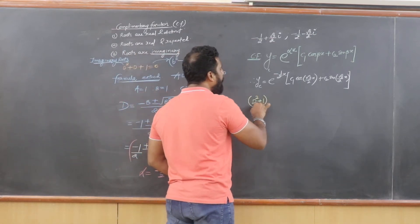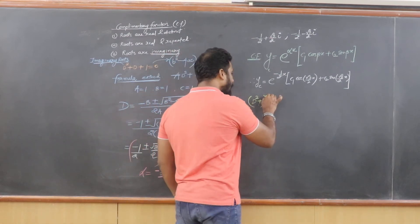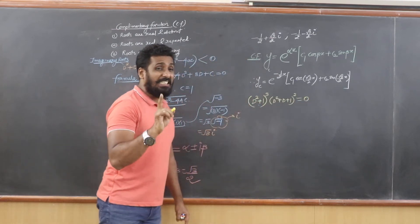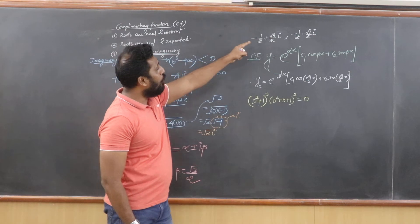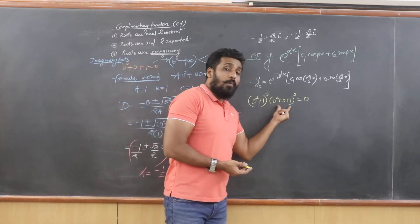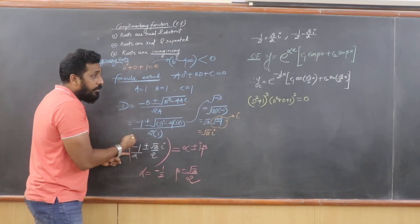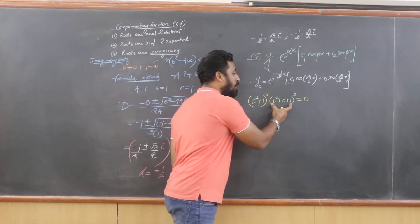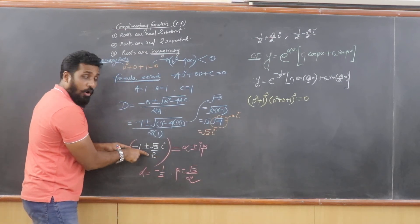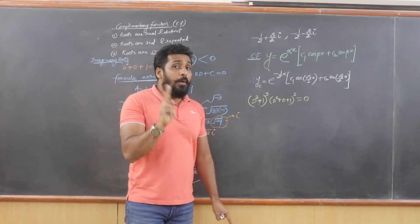Now let's take one more example to understand repeated imaginary roots: (d² + 1)³ · (d² + d + 1)² = 0. For d² + d + 1, we already found the roots -1/2 ± (√3/2)i. Since it appears squared, those two roots repeat two times each.